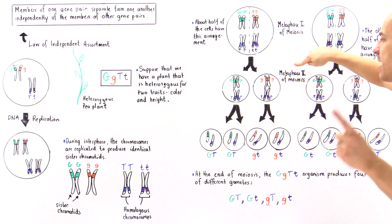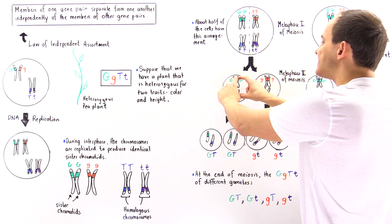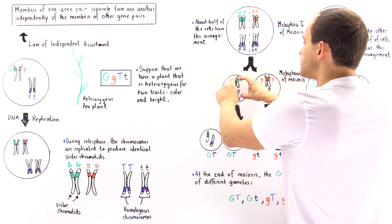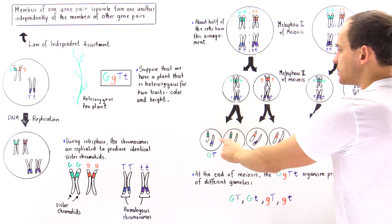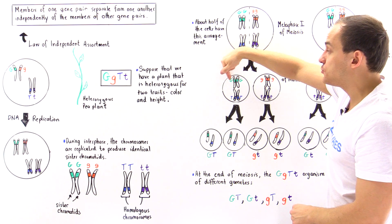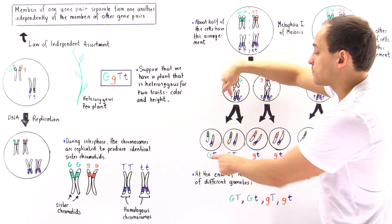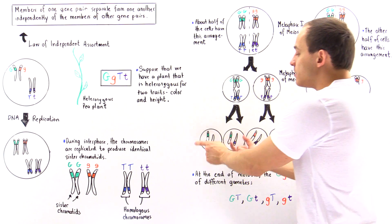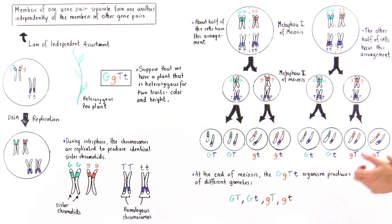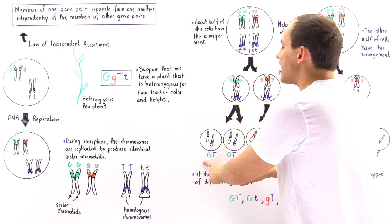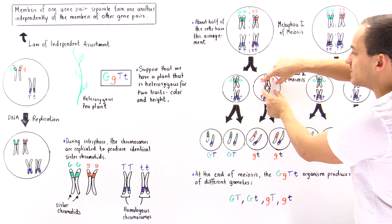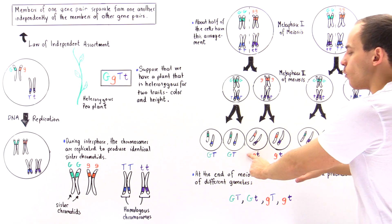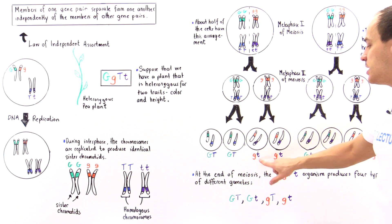This is what we have at metaphase II of meiosis. The sister chromatids, which are identical, now separate. We form the following cells: one cell carries uppercase G and uppercase T, forming that gamete, and the other carries the same — because without crossing over, these two are identical. Similarly, the other pair separates to produce gametes with uppercase G and uppercase T, and lowercase g and lowercase t.